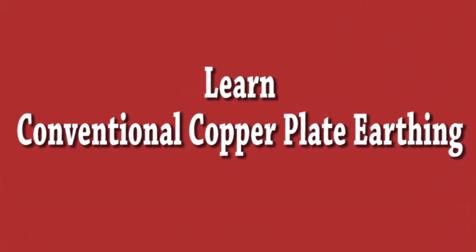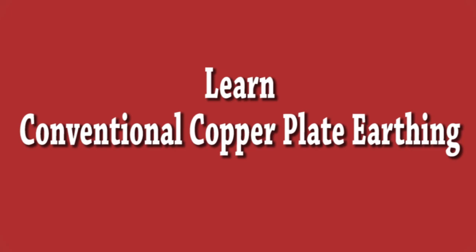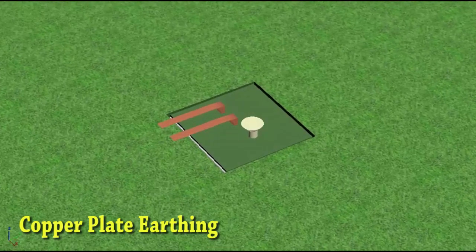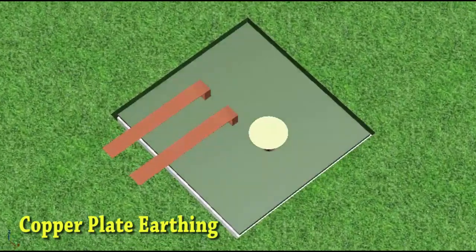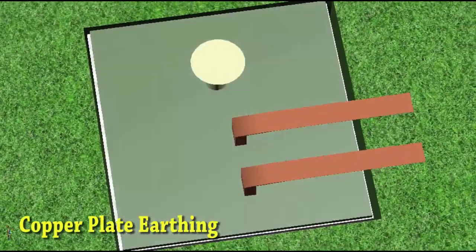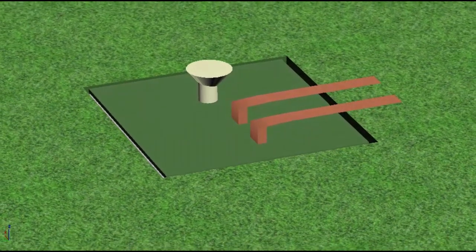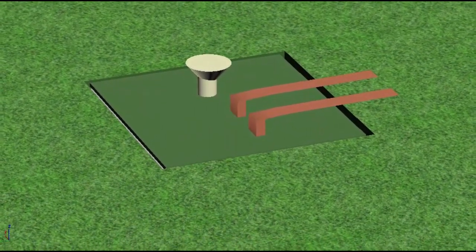Let us learn how to do copper plate earthing. Here we can see earthing with two strips, generally of galvanized iron, emerging from the earth pit. All earth wires are connected to these strips. Also, a funnel is there to pour water inside the earth pit.